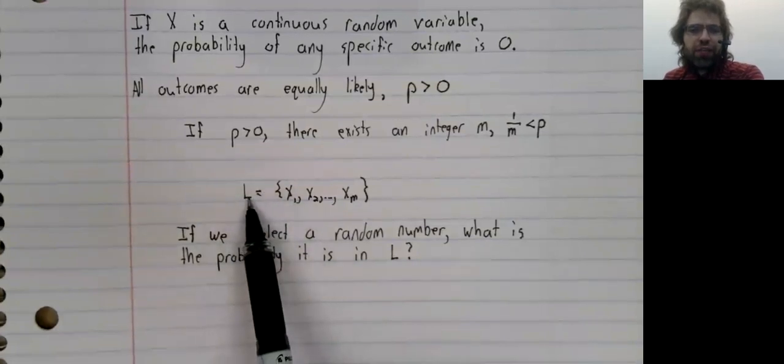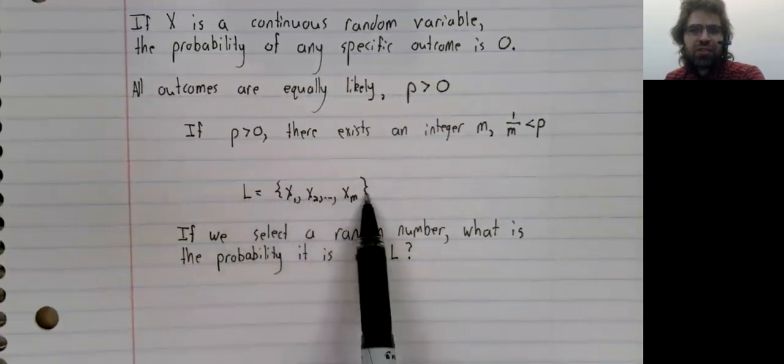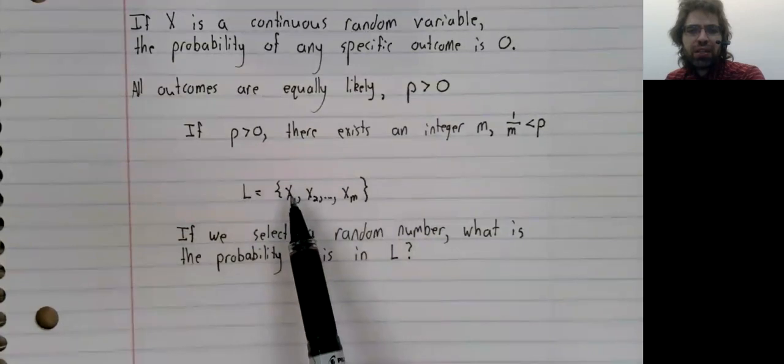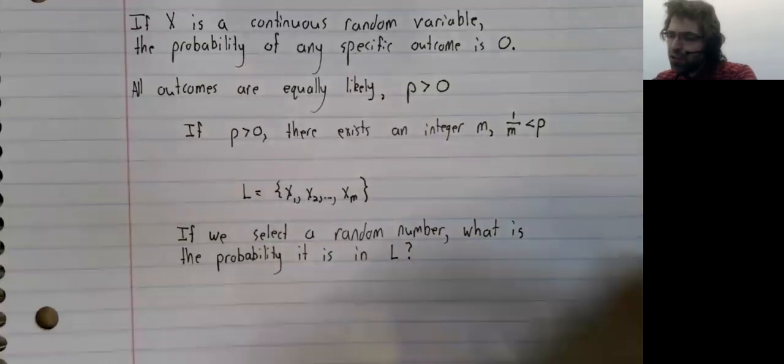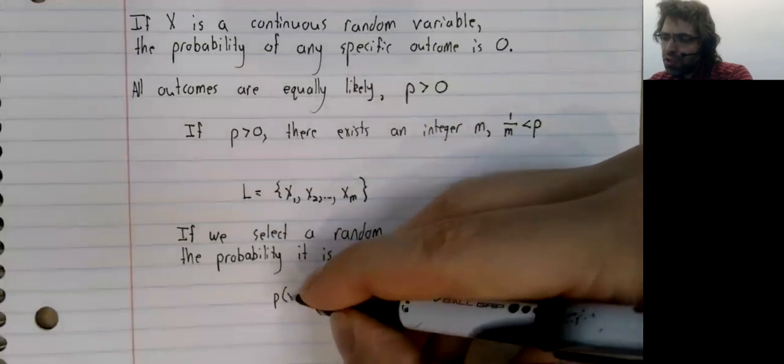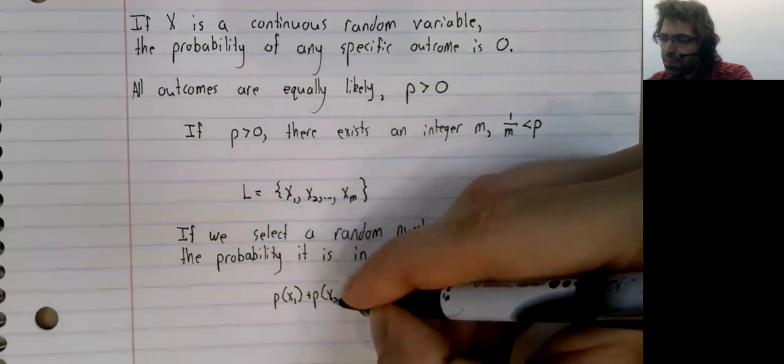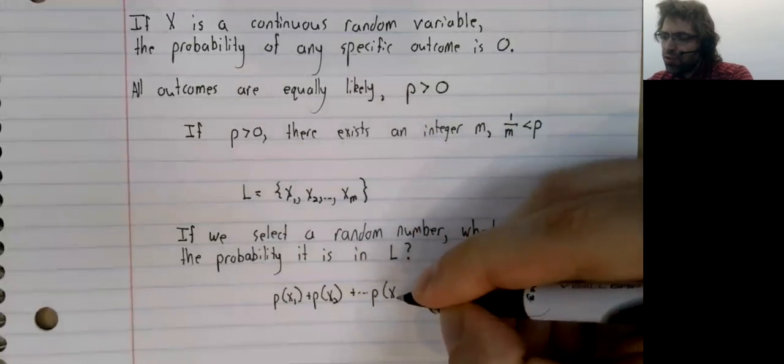Well, if we have an event that's broken up like this as a bunch of sub-events, then to calculate the probability of this, we would find the probability that the number is this, plus the probability that the number is this, and so on. We would calculate this probability like so.